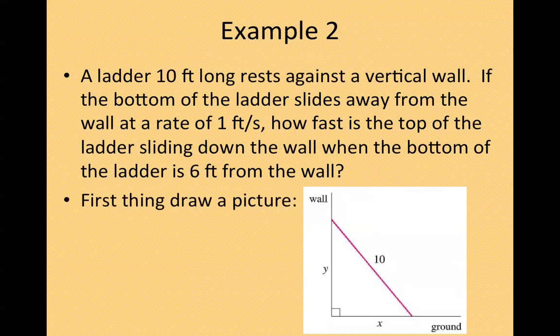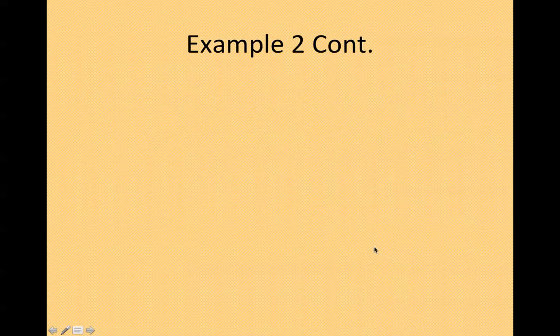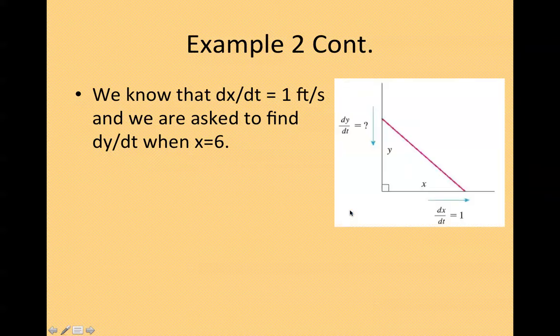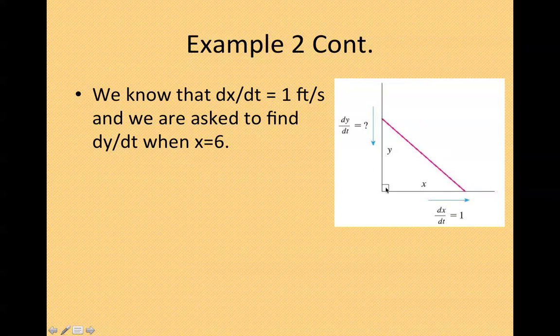First thing, draw a picture. So here's my picture, x, y, and 10 being my ladder. Now I need to draw the picture with respect to the variables that I want to find. We know that dx/dt is 1 feet per second and dy/dt is x equals 6. So I can plug in this information right here.